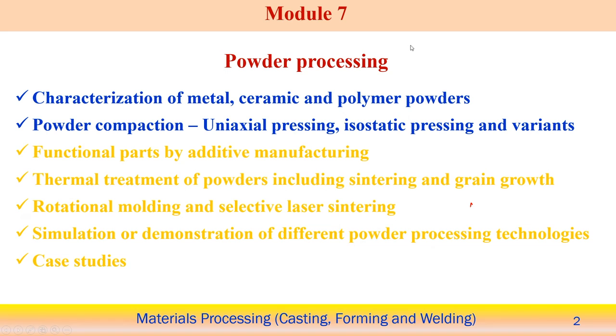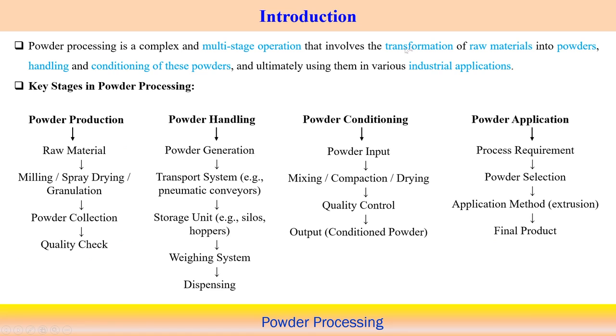In this sub-module I have divided the content of powder processing into different sub-modules. This particular sub-module covers two parts: first, characterization of metal, ceramics, and polymer powders, and then powder compaction methods using uniaxial pressing, isostatic pressing, and their different variants.